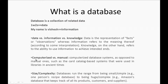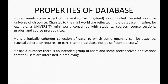A database is not only a computerized database — it can also be a manual database. A phone directory is also a database because it stores phone numbers, but it is not computerized. A card catalog system in a library is also an example of a manual database. In ancient times manual databases were used; nowadays we use computerized databases to store information.